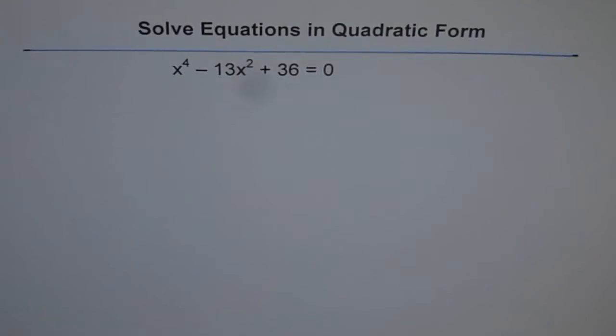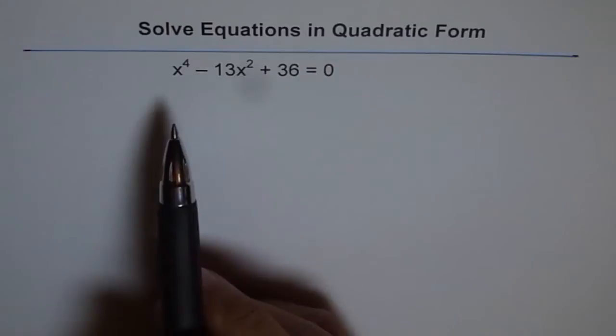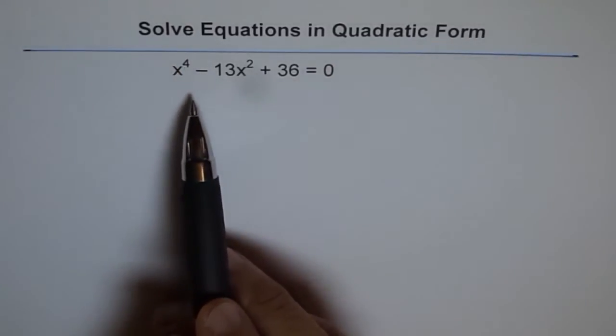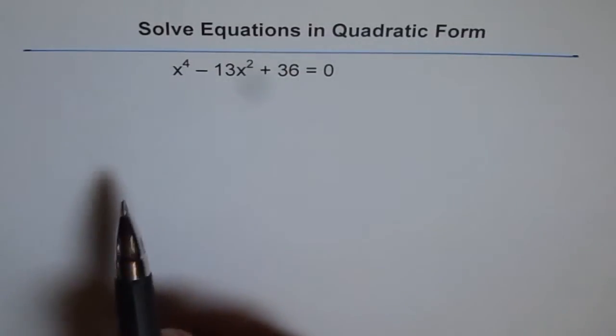Solve equations in quadratic form. In this series we will have a couple of questions where the equations will not be quadratic but they can be seen as quadratic in different ways. So this one is, for example, a degree 4 equation. We have x to the power of 4 minus 13x squared plus 36 equals 0.